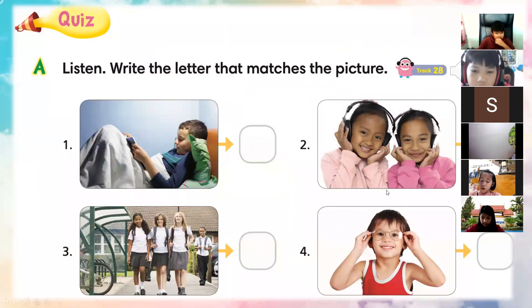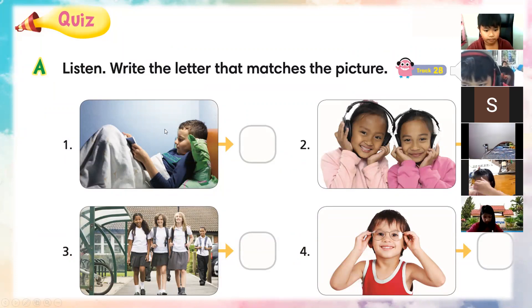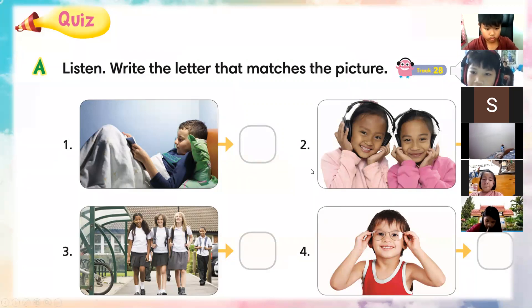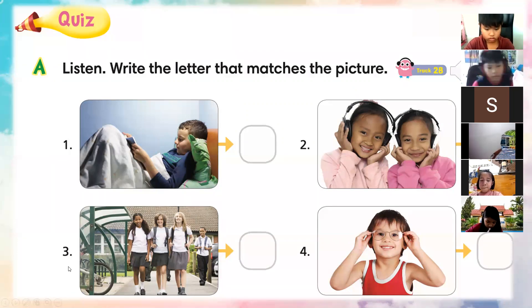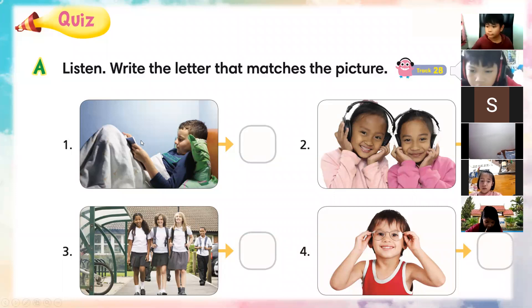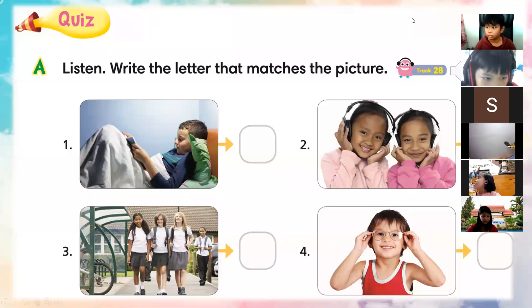Here we have four different pictures, and in the track they are talking about what we see in the picture. For each number they give three options: A, B, or C. For picture number one, three options A, B, C. For picture number two, three options A, B, C. For picture number three, A, B, C. And the fourth one also has three different letters. You have to write the best one which matches the picture. Listen carefully.